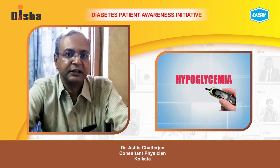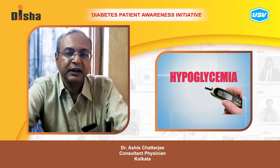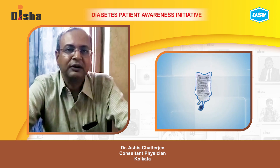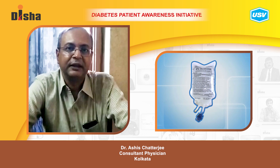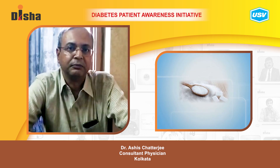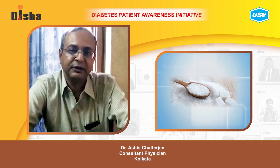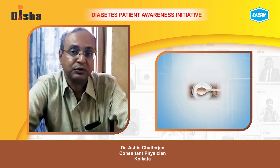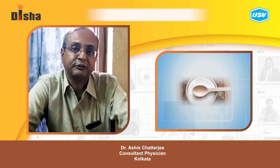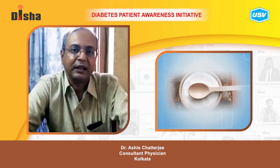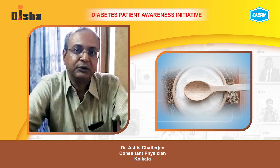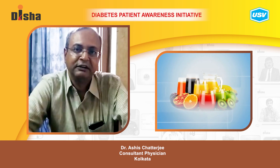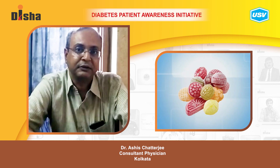Hypoglycemia is a diabetic emergency and it has to be treated with administration of either intravenous glucose, or if the patient is conscious, by administration of oral sugars. Sugars can be given as three teaspoonfuls of normal sugar, that is 15 grams, or you can also use a cup of syrup or a cup of fruit juice. If the patient carries glucose tablets with him, he can also take those.